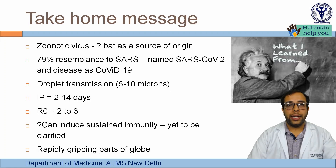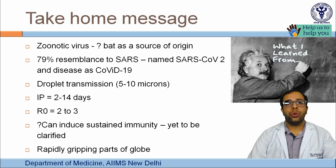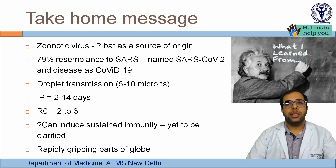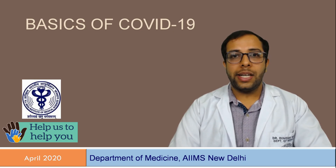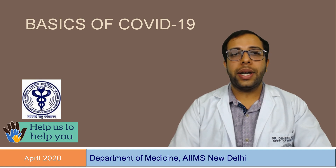The take-home messages are: COVID-19, caused by SARS-CoV-2, is a zoonotic disease with bats as the possible source, named for its 79% homology to SARS-CoV. The major mode of transmission is droplet transmission with particle sizes of 5 to 10 micrometers. Incubation period ranges from 2 to 14 days with a median of 5 to 6 days. Reproduction number varies between 2 to 3 with a median of 2.4. The role of immunity must be explored diagnostically via serology and therapeutically for vaccines and treatment of severe cases.